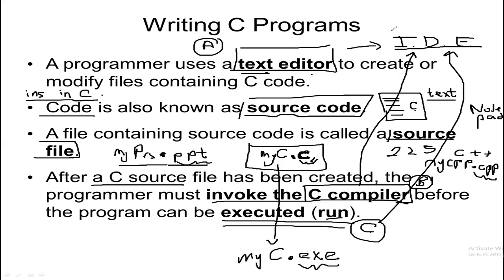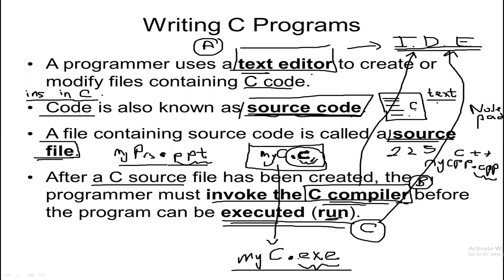To summarize the basic idea: you use a text editor to write C code. When everything is in one C file, that is your source code. When you save it, you have the source file — but you cannot run it directly. You need to first compile it. Compiling converts myc.c to myc.exe. Then you can run it from the IDE or by double-clicking the .exe file.